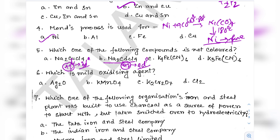Question 9: Point out the incorrect reaction. The reaction 2MnO2 + 4KOH + O2 → 4K2MnO4 + 2H2O is correct. However, MnO4⁻ + 8H⁺ + 5Fe²⁺ → 5Fe³⁺ + Mn²⁺ + 4H2O is incorrect. That is the answer.